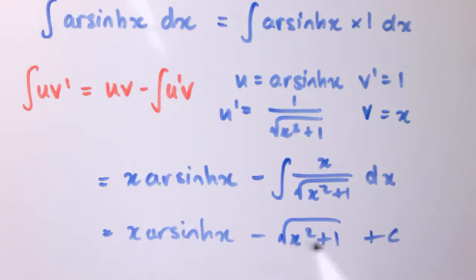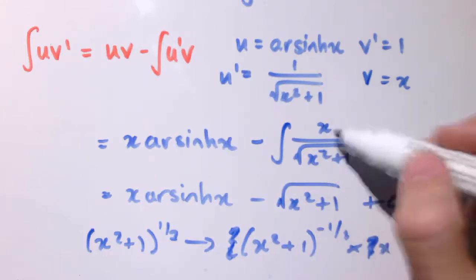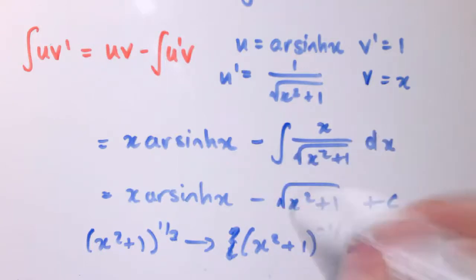If I were to differentiate the square root of x² + 1, that's (x² + 1)^(1/2). So when I differentiate that, I would get 1/2(x² + 1)^(-1/2). Then by the chain rule, I multiply it by 2x. So the 2 and the 1/2 cancel out and I've got exactly what I've got here: x over the square root of x² + 1.